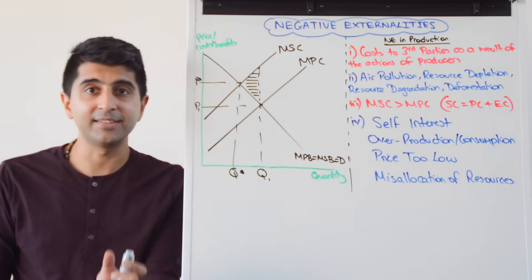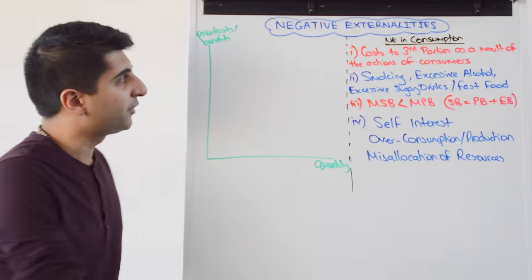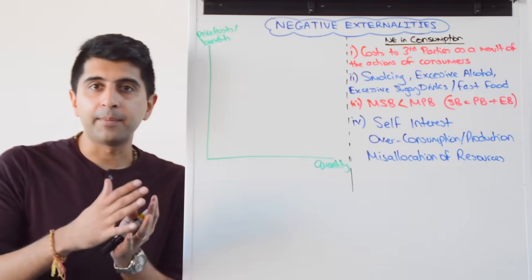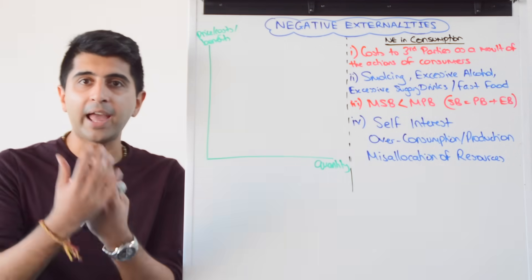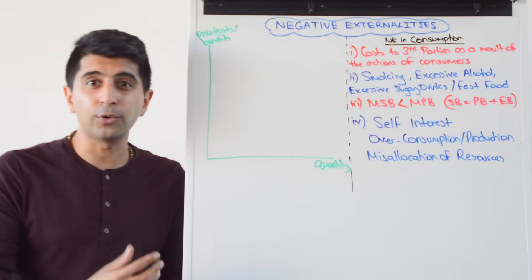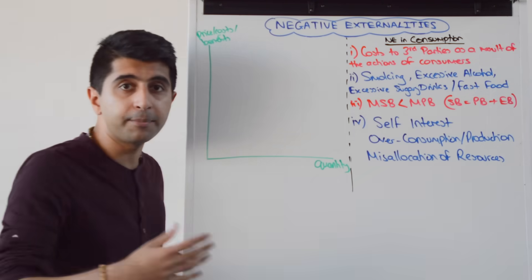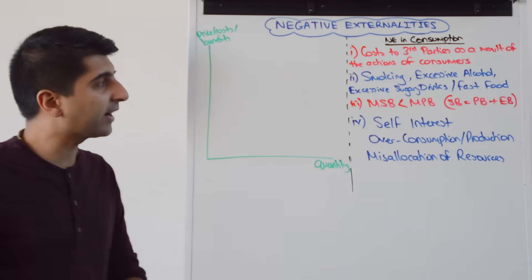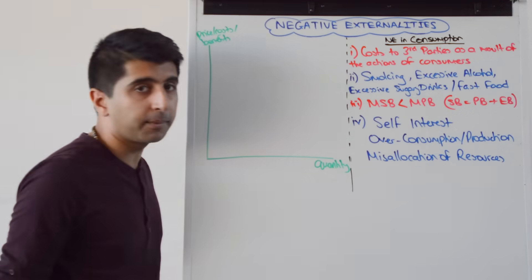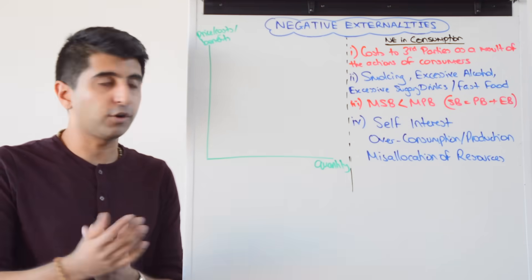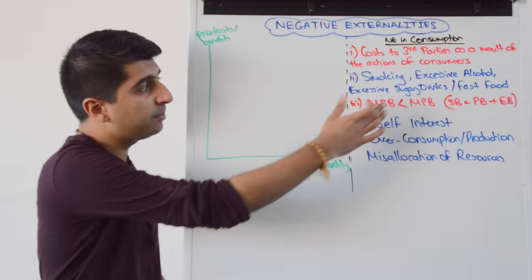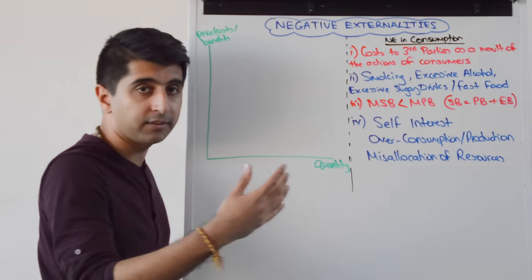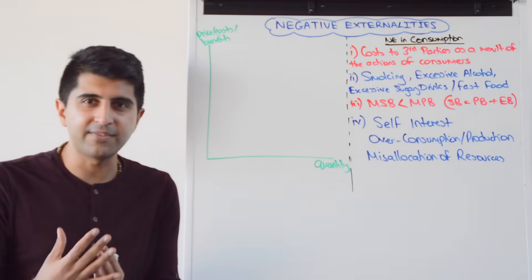Let's now look at negative externalities in consumption. These are costs to third parties as a result of the actions of consumers. For example, consumers might be smoking and there might be an impact on third-party bystanders who inhale the passive smoke and are at greater risk of lung cancer or suffer respiratory problems. Those who excessively drink alcohol — third parties could be health services or police services that have to deal with treating them or dealing with crime as a result of their actions. Excessive sugary drink or fast food consumption can have a significant cost on the health service, with extra cost of treatment as a result of obesity-related issues. There could also be a negative impact on employers who have to suffer lost productivity or days missed from work.